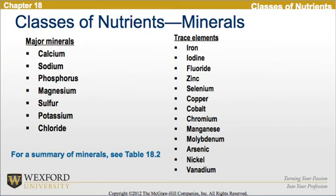Moving on to the classes of nutrients and focusing on minerals, there are major minerals and trace elements. The major minerals are calcium, sodium, phosphorus, magnesium, sulfur, potassium, and chloride. The trace elements include iron, iodine, fluoride, zinc, copper, cobalt, chromium, magnesium, arsenic, nickel, and others. For a summary of the minerals, please see table 18.2.